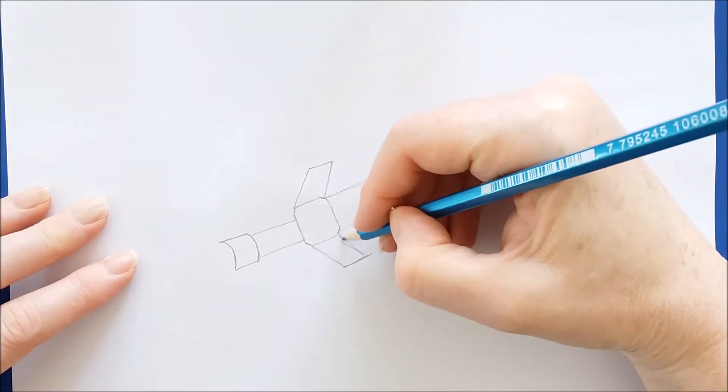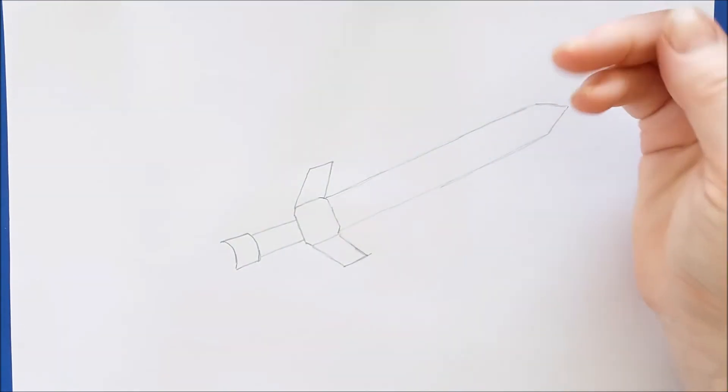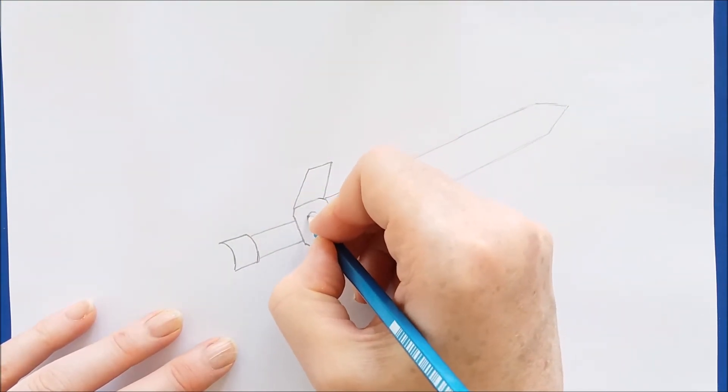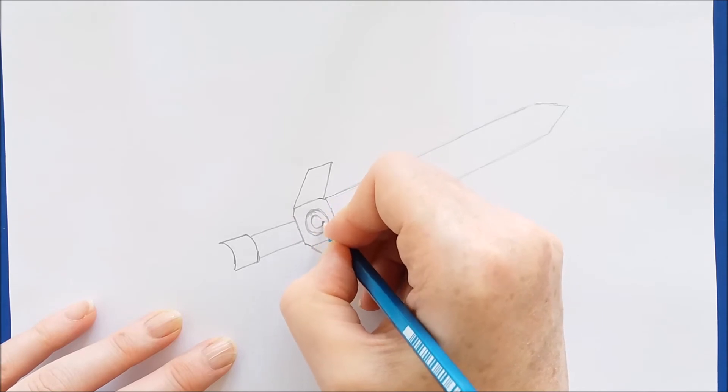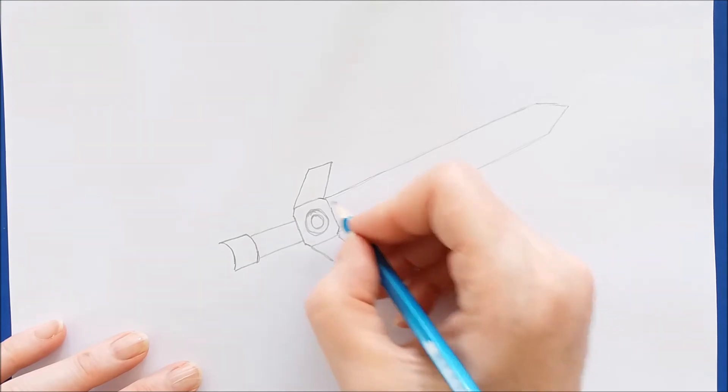To draw that medallion, we're going to just go ahead and draw a circle right here. We'll draw that circle, and then inside of that circle we'll draw another smaller circle. So here we have the basic shape of the sword.